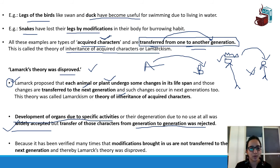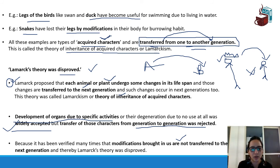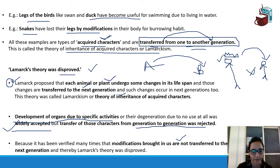It has been verified many times that modifications brought in us are not transferred to new generations. For example, if you are not using your brain, it doesn't mean your child will also be like that. These acquired characteristics were not found to transfer from one generation to the other, which is why Lamarck's theory was disapproved.